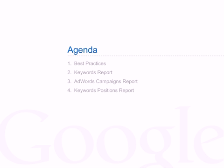Let's take a look at our agenda for today. Firstly we'll look at some best practices to follow when reading the reports in our Analytics accounts. Then I'll take you through three AdWords reports which are available in the account: firstly the Keywords report, then the AdWords Campaigns report, and finally the Keywords Position report.